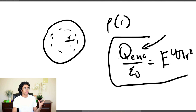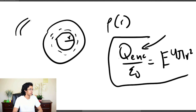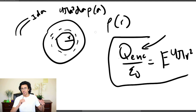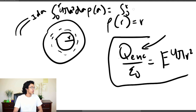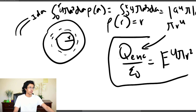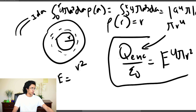To find Q-enclosed we split the sphere into concentric shells. A shell at radius a with thickness da has volume 4πa² da. Its charge is 4πa² da times rho(a). We integrate from 0 to R to sum all shells within radius R. Let's say rho(r) equals r, so the integral becomes the integral from 0 to R of 4πa³ da, which equals pi R to the fourth. Plugging back into Gauss's Law and solving, E equals R squared over 4 epsilon-naught.